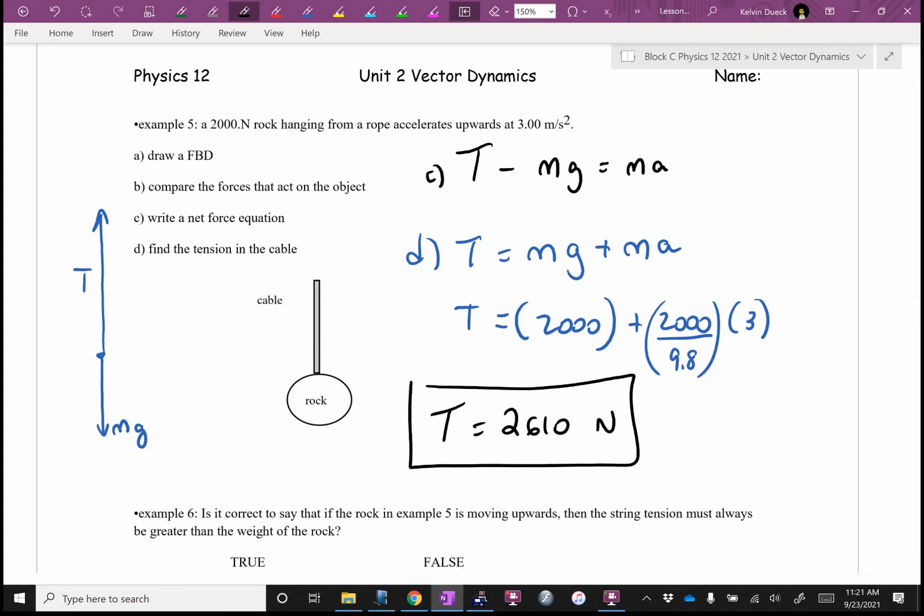I see a vote question coming up again. A thought puzzle. It says this. Is it correct to say that if the rock in example 5 is moving upwards, then tension, which is 2,610, must always be larger than the weight of the rock, 2,000? Is it correct to say that if the rock is moving upwards, tension will always be bigger than MG? Who says, Mr. Duick? This is obvious. True. Of course it is. Really? Who says, false. Tension doesn't have to be bigger than the weight of the rock?